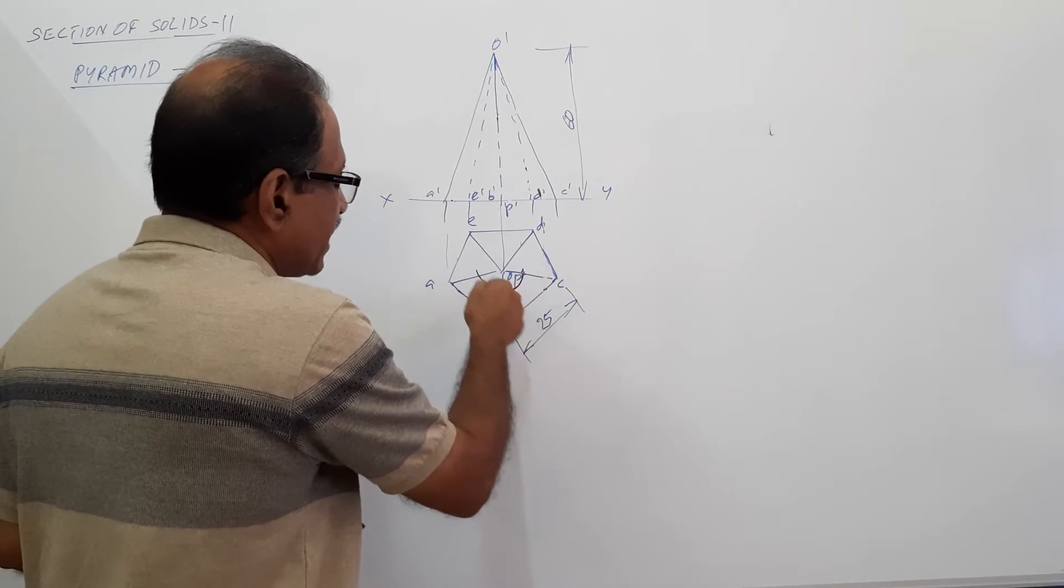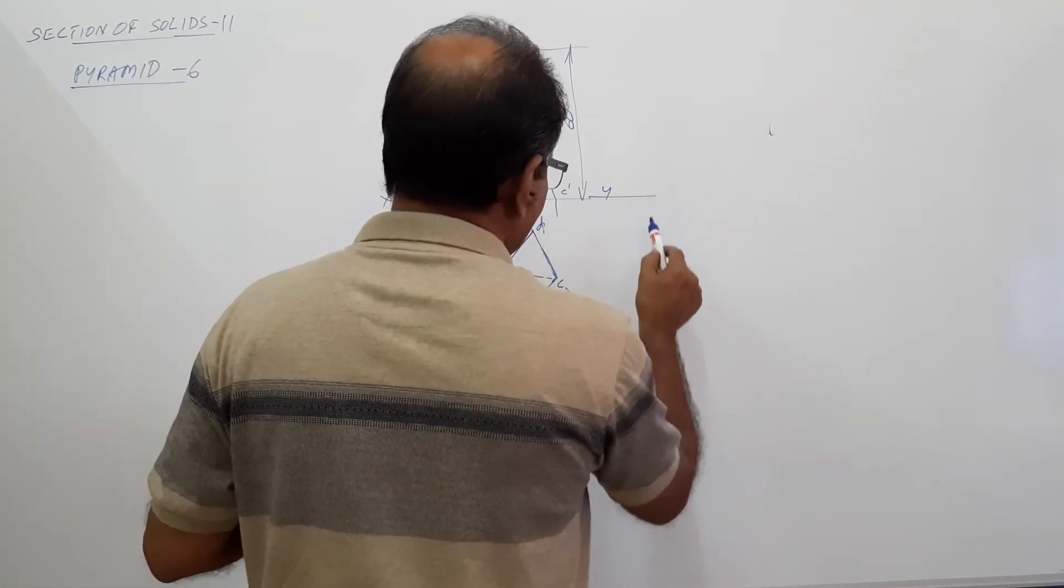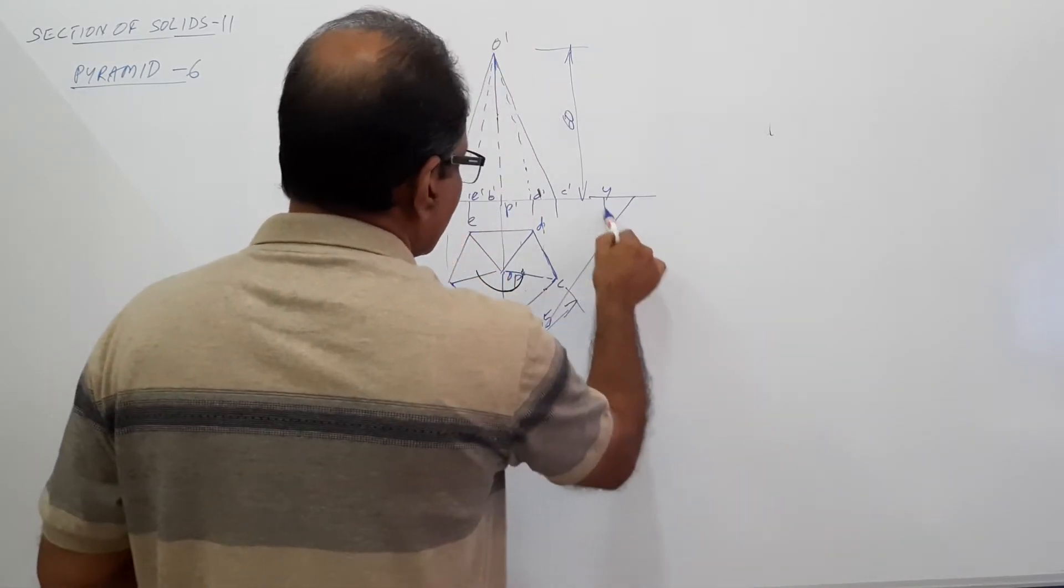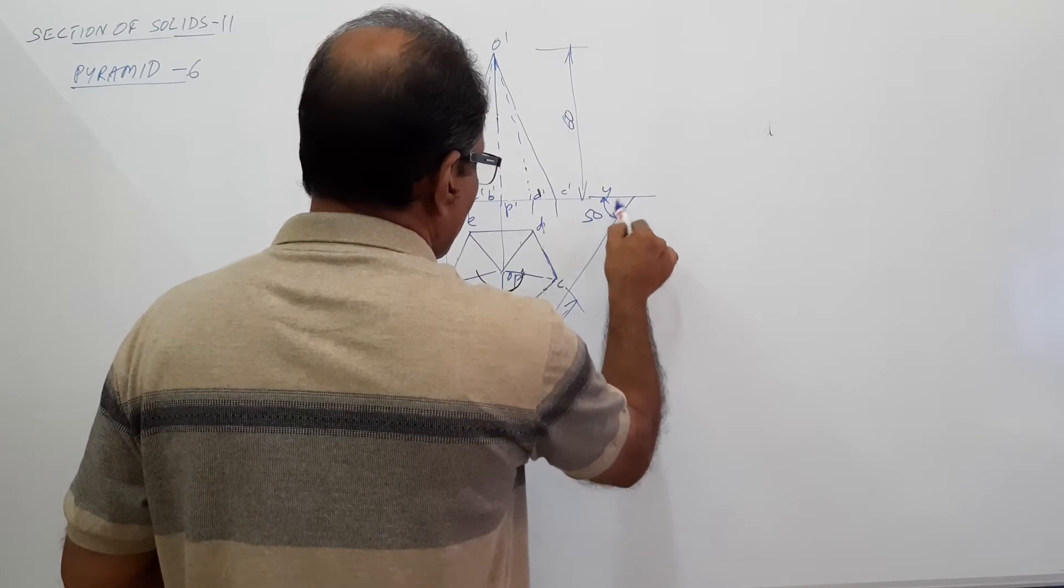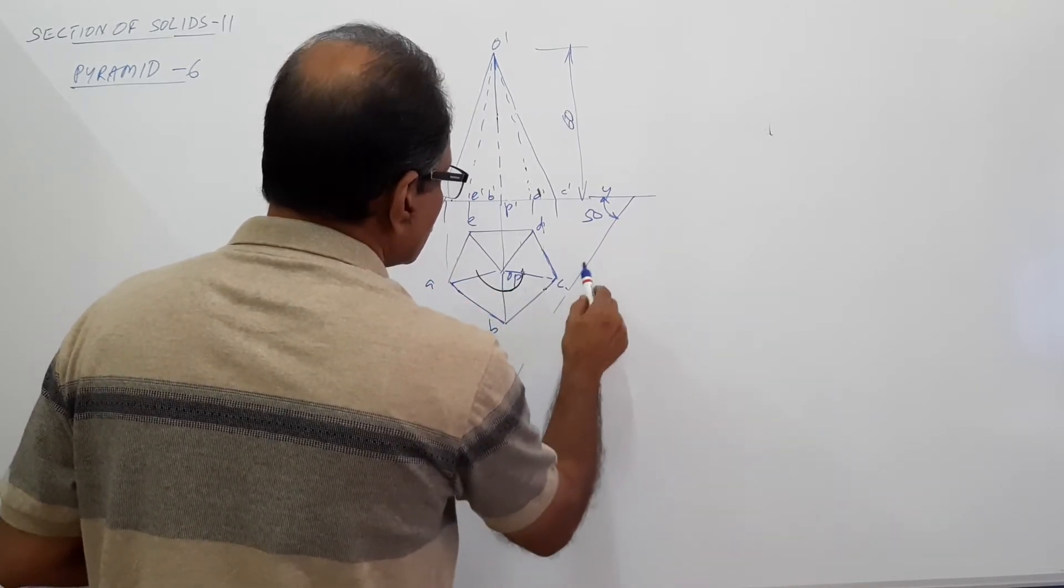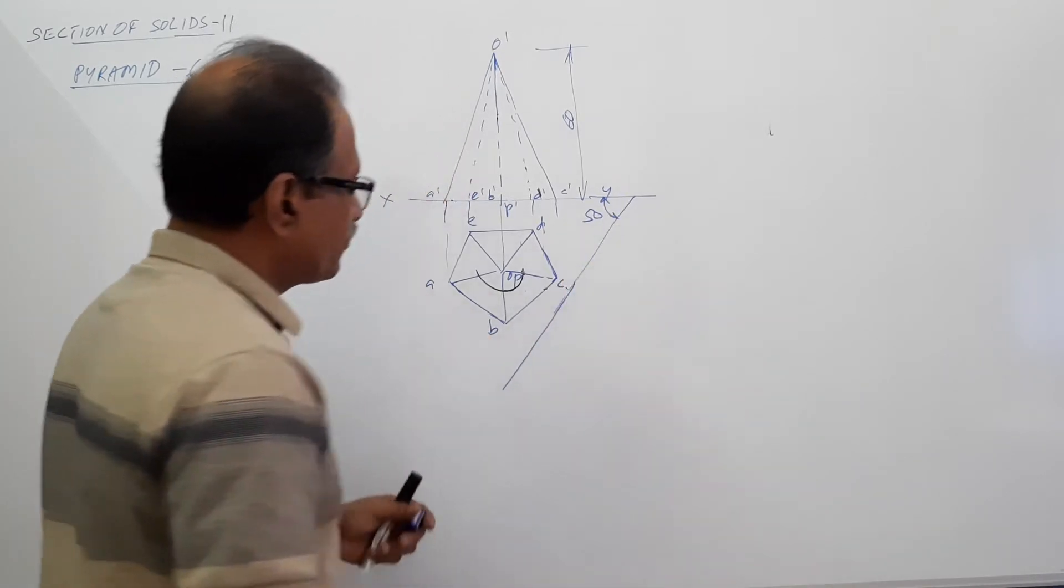So draw an arc 10 mm radius somewhere on XY line. Draw a 50 degree line.